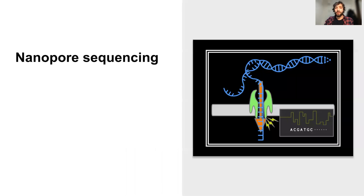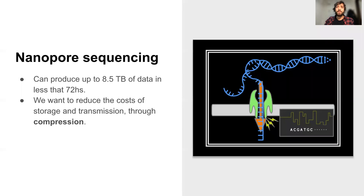Nanopore sequencing technologies are rapidly gaining popularity, in part due to the massive amounts of genomic data they produce in short periods of time. The newest devices can actually produce up to 8.5 terabytes of data in less than 72 hours. In this context, we believe that it is crucial to reduce the cost of storage and transmission of Nanopore data, and we propose to do this by building a compressor.